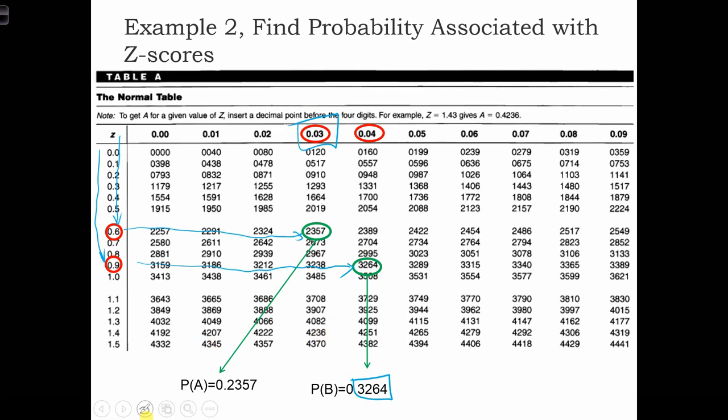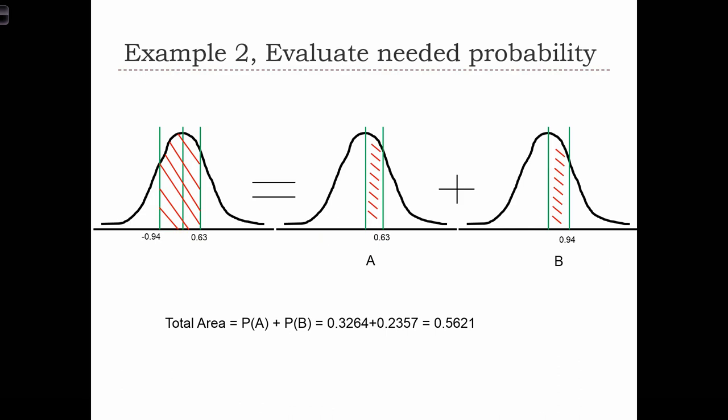Now we just need to add those two things together to get our answer. So the probability equals 0.3264 plus 0.2357, which equals 0.5621.